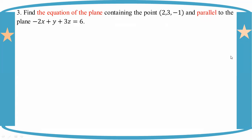The given plane is -2x + y + 3z = 6, passing through (2, 3, -1). The directed value of the line perpendicular to the plane is (a, b, c) = (-2, 1, 3).